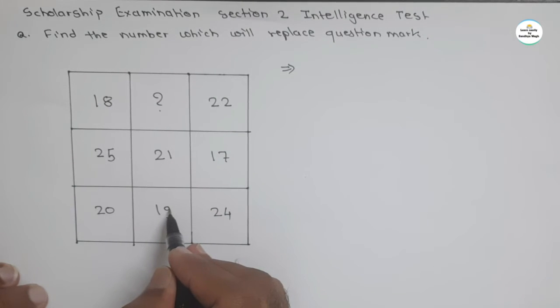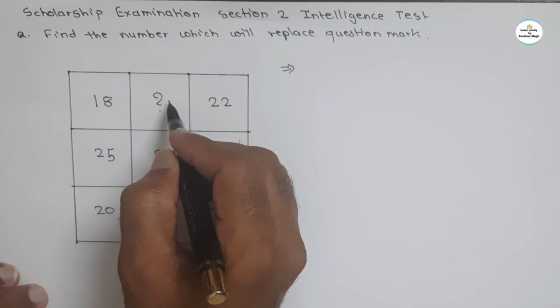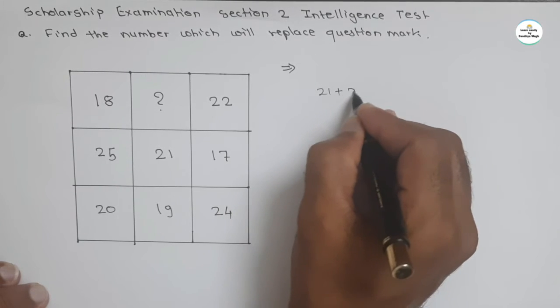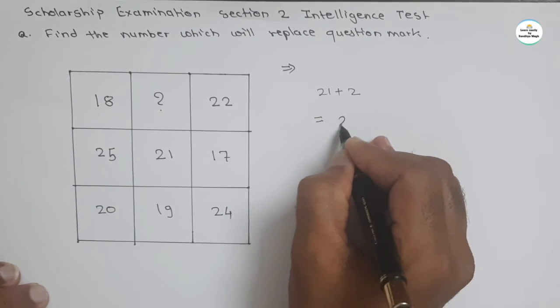21 minus 2 we get 19. So we must add 2. So what will be our answer? 21 plus 2, our answer will be 23.